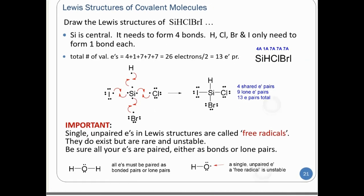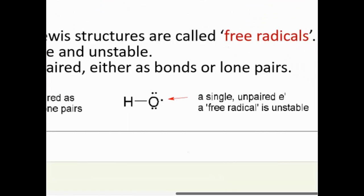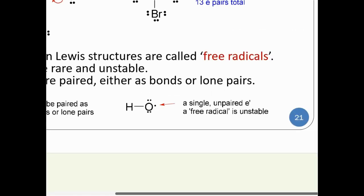A word of warning: when drawing a Lewis structure, you should never wind up with a single unpaired electron — that's called a free radical, and free radicals are particularly reactive and unstable. We'll be considering cases where we have even numbers of electrons, as most structures do. So be mindful: no single unpaired electrons should remain in your structure. All electrons should be paired up, either as line bonds or non-bonded pairs.